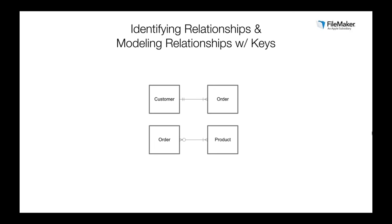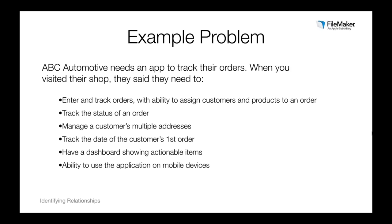In this section we're going to discuss how to identify entities, attributes, and relationships from an example problem, and then we'll touch on modeling relationships with keys. The example problem: ABC Automotive needs an app to track their orders. You visited their shop and gathered a list of requirements for what they need the application to do.